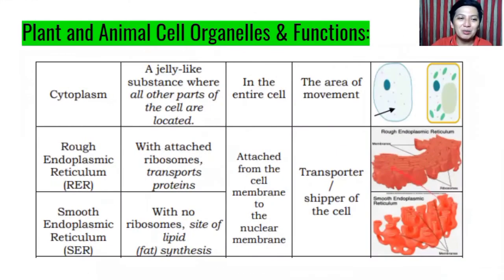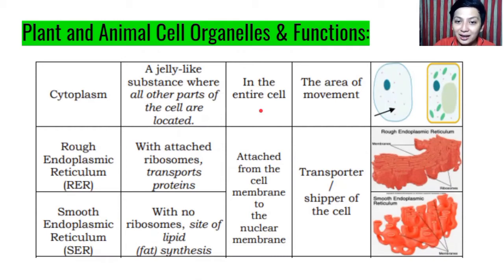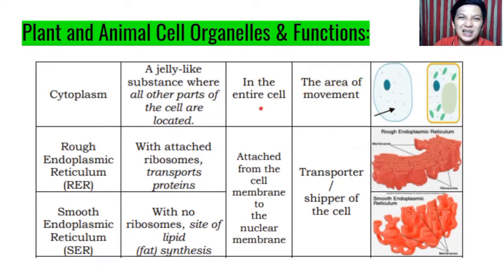Next, we have cytoplasm. Cytoplasm is a gel-like substance where all other parts of the cell are located. It is located throughout the entire cell — the area of movement. It is a jelly-like structure or substance.